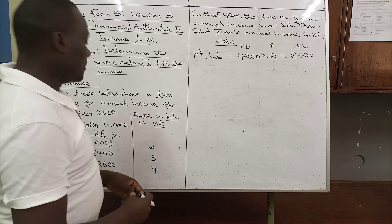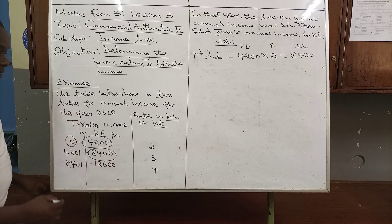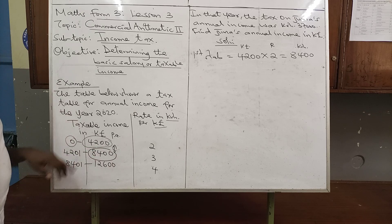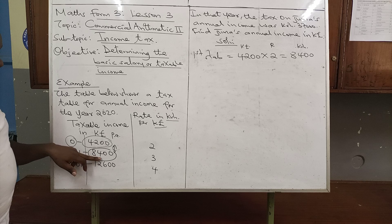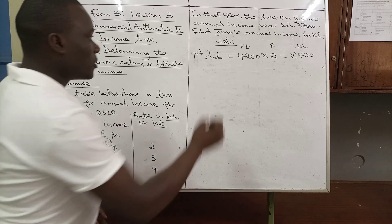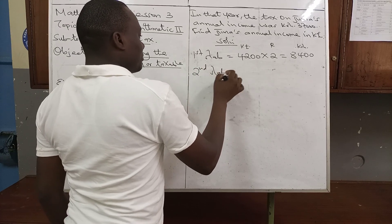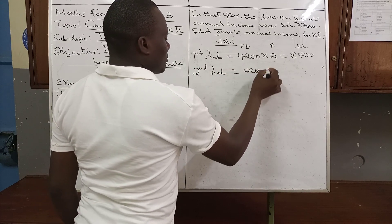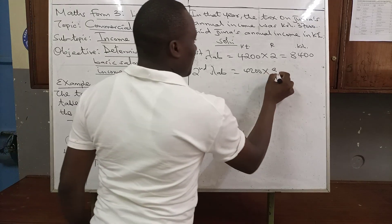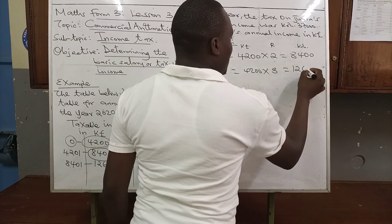In the first slab: 4,200 times 2 gives 8,400 Kenya shillings. Then instead of applying 8,400 again, we subtract the two figures: 8,400 minus 4,200 gives 4,200, which we use in the second slab. The rate in the second slab is 3, so 4,200 times 3 gives 12,600.